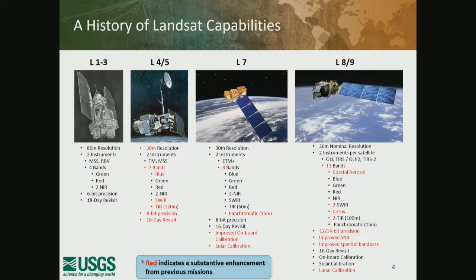NASA is responsible for the space segment and launch; USGS is responsible for flight operations and data processing, distribution, and archiving. Throughout Landsat history, we've seen improvement across the board: spatial resolution increased from 80 meter to 30 meter, additional spectral bands in visible shortwave infrared, thermal infrared, and atmospheric bands, temporal resolution improved from 18 days to 16 days, improved radiometric performance including improved SNR, bit depth from 6-bit to 8-bit to 12 and 14-bit, and improved solar and lunar calibration.